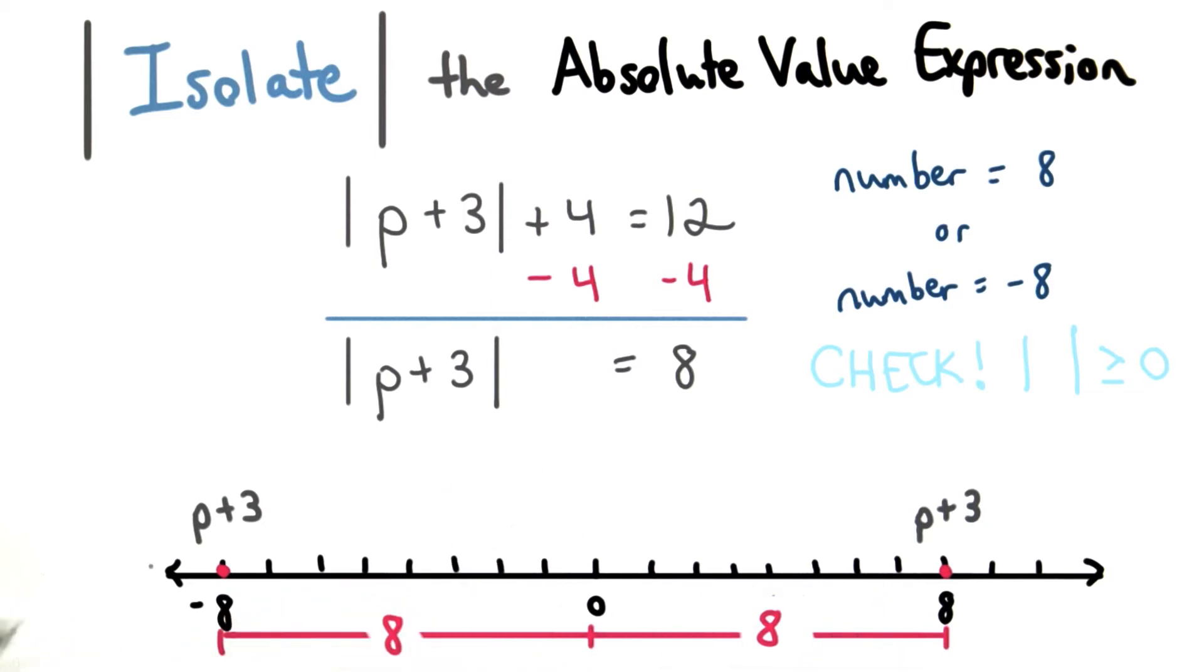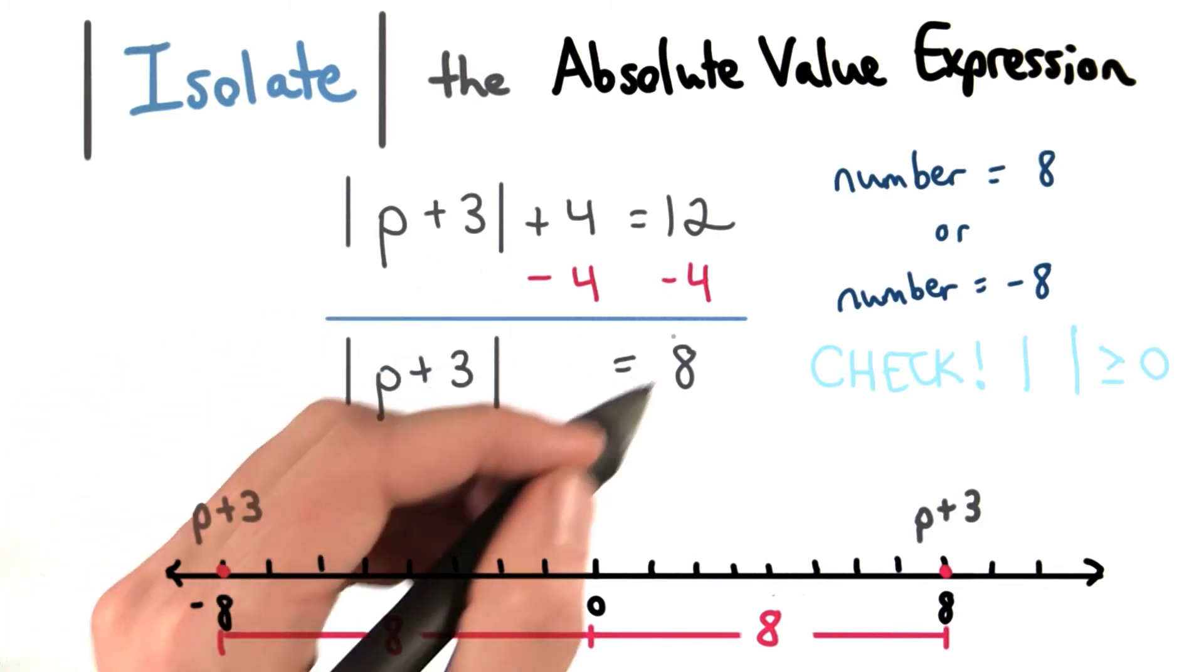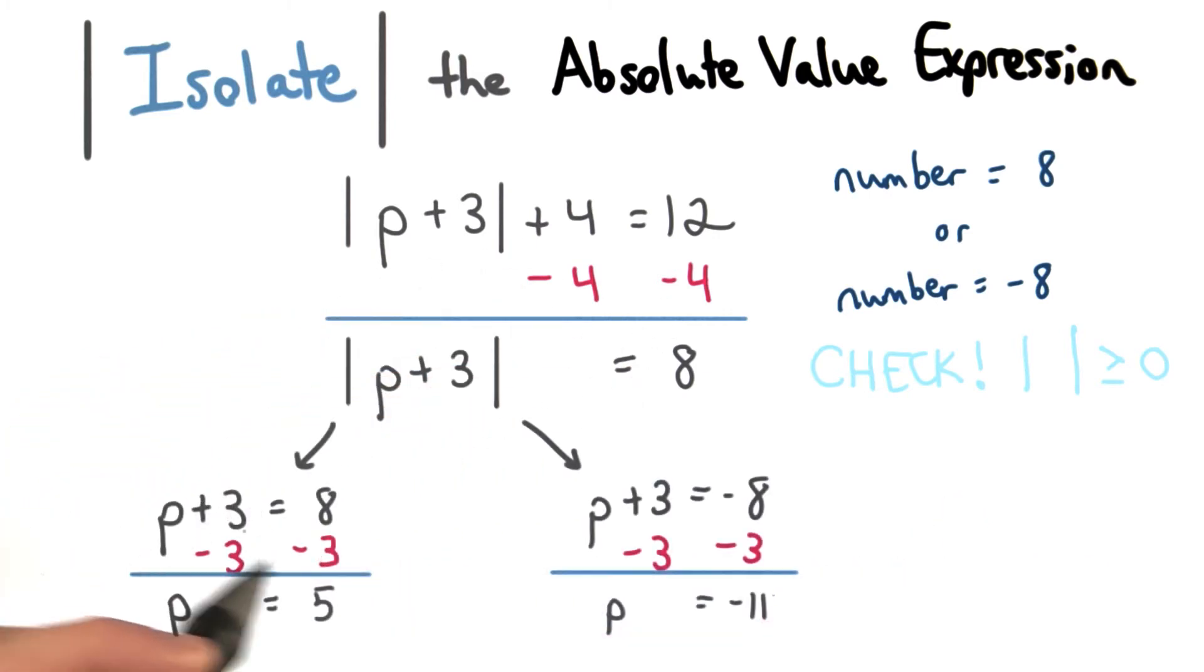And at this point, you might even be able to solve it in your head, which is great. For more complicated questions, it's best to stick to the equation solving. Subtracting 3 from both sides, p could equal 5, and subtracting 3 from both sides, p could equal negative 11.